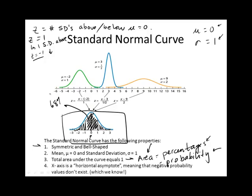The x-axis is what's called a horizontal asymptote, which means that negative probability values don't exist. We know that the probability of any event is between zero and one, which means that negative values do not exist — there are no negative probability values — so nothing is going to go below the axis.